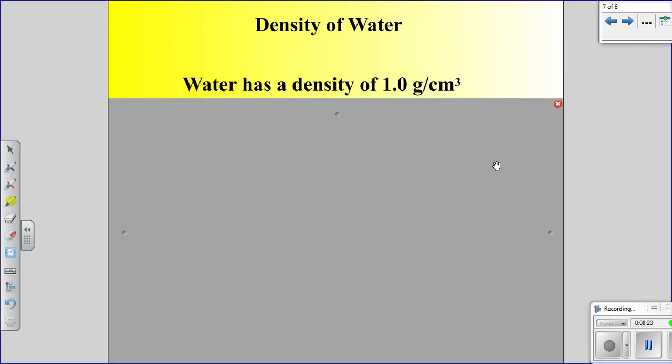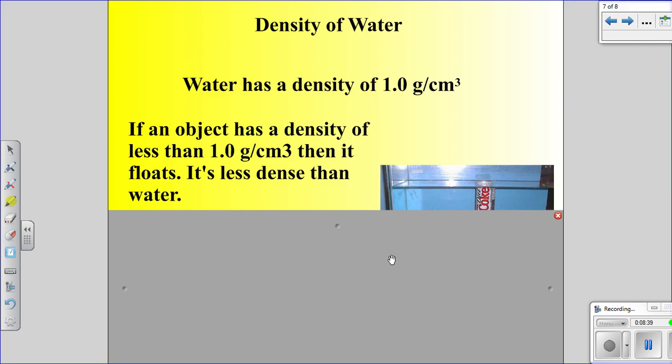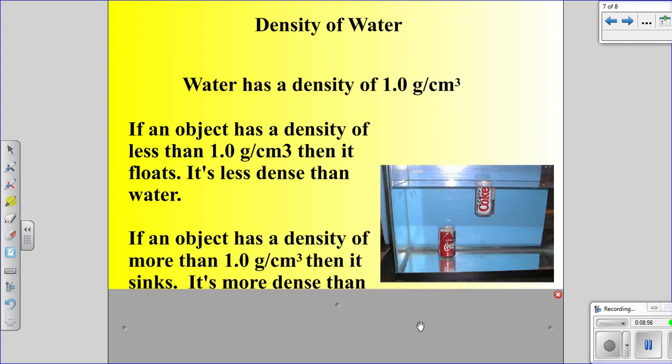The density of water is actually 1.0 grams per centimeters cubed, or gram per cubic centimeters. And it turns out that if an object has a density of less than 1 gram per centimeter cubed, then it floats. It's less dense than water. So if it has a number right here that's less than 1, 0.9, 0.8, 0.5, anything less than 1, it's going to float. If it has a density greater than 1.0, then it's going to sink.